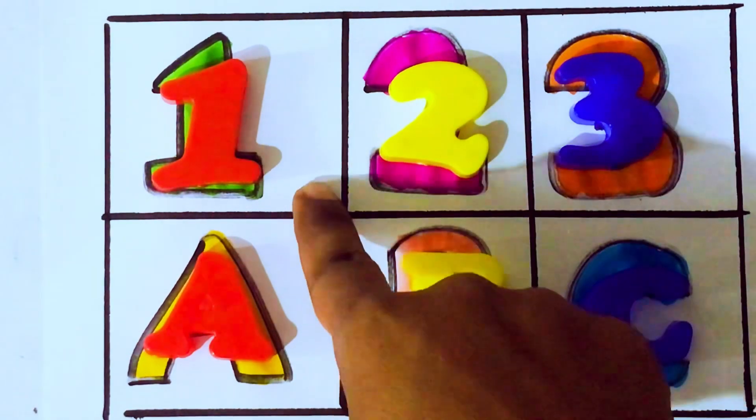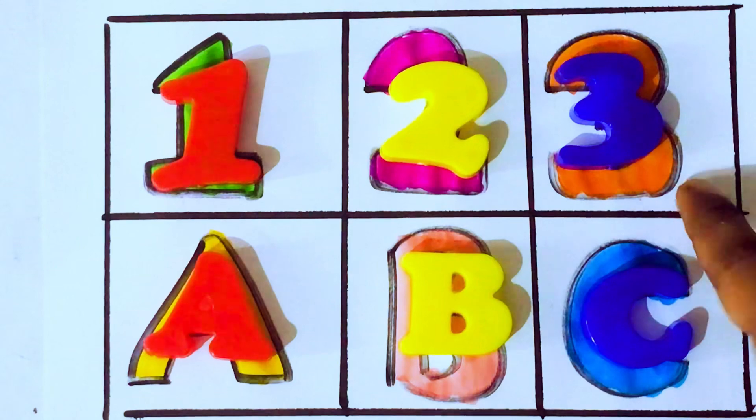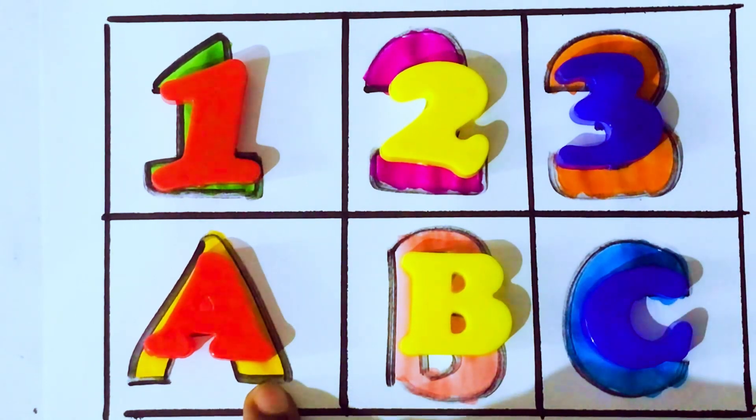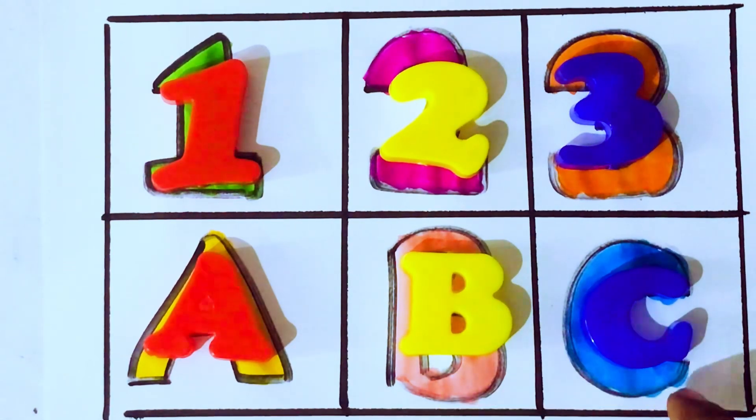O, N, E, 1. T, W, O, 2. T, H, R, E, E, 3. A, A for Apple. A, P, P, L, E, Apple. B for Ball. B, A, L, L, Ball. C for Cat. C, A, T, Cat.